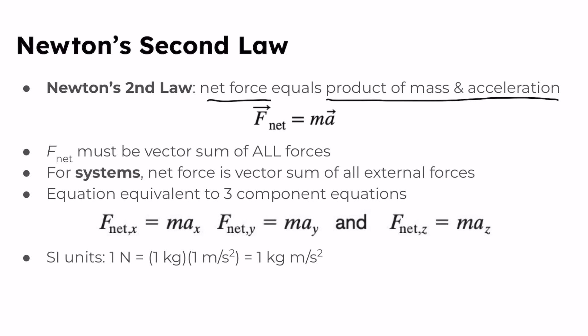In an equation form, we get F net, the vector, equals the mass times the acceleration vector. The net force must be the vector sum of all the forces. So again, going back to the idea, if we have a ball and we have multiple forces acting on it like so, then it has to be the vector sum of all of these forces.